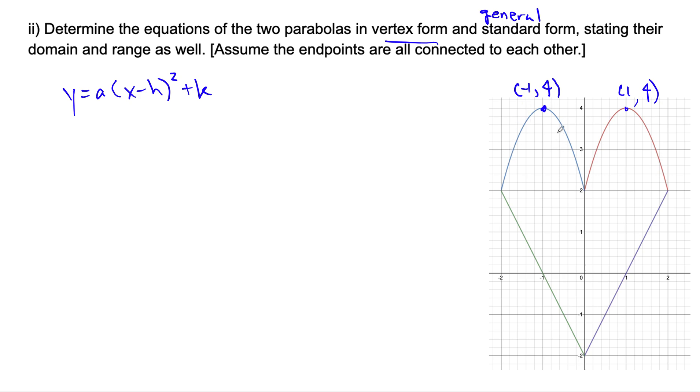Let's just focus on the left parabola here. We can start by saying y = a(x - h)² + k. This is h and this is k. Substituting that in, that will become (x + 1)² + 4.